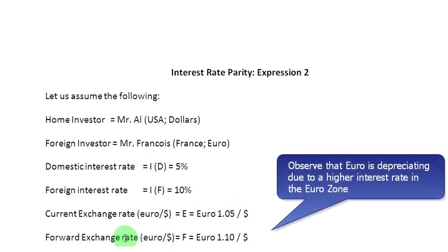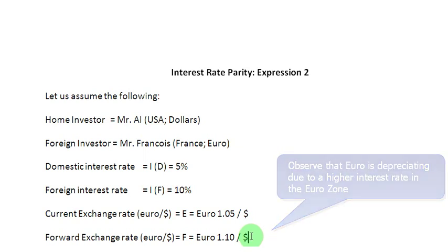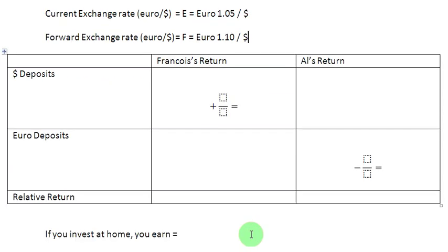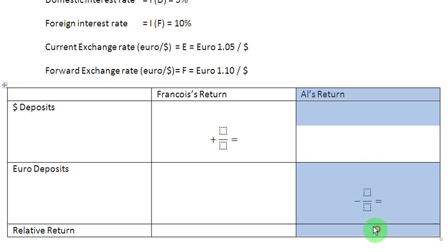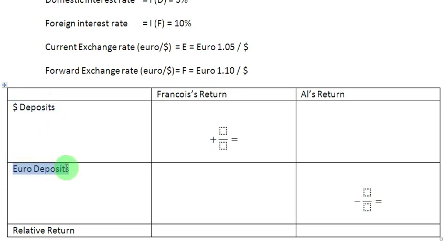The forward exchange rate one period ahead, represented as F, is equal to 1.10 euros to a dollar. Now let us examine each of these gentlemen's alternatives and their actions by preparing a table. In this table, one column covers Mr. Francois and another covers Mr. Al. Row-wise, we will talk about dollar deposits in one row and euro deposits in another, and then take the difference between these two alternatives, called the relative return.